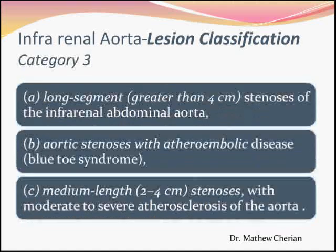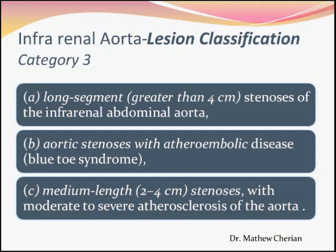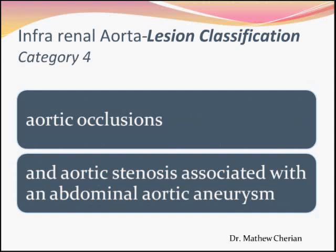Category 3 lesions are long segment lesions greater than 4 cm, or an aortic stenosis with evidence of atheroembolic episodes, or a patient with a stenosis presenting with Leriche syndrome, or a patient with a 2 to 4 cm lesion with significant atherosclerotic disease of the aorta. Category 4 lesions are where the aorta is totally occluded, or an aortic stenosis associated with an aortic aneurysm.